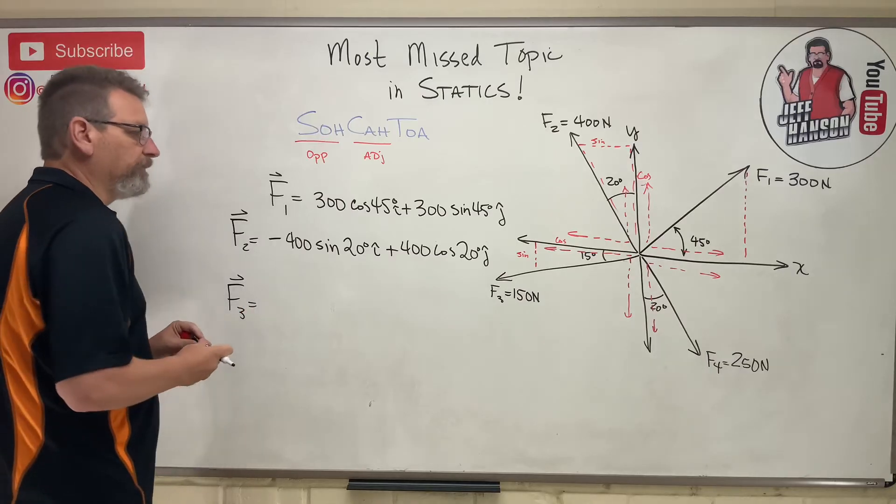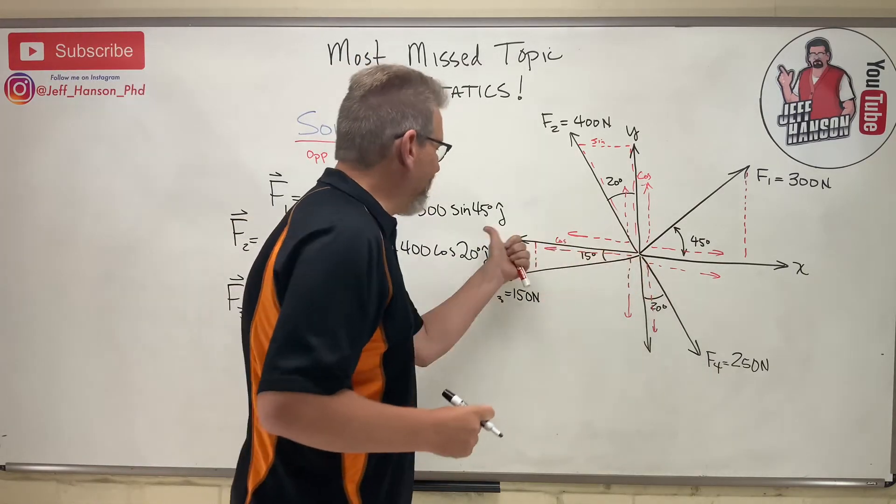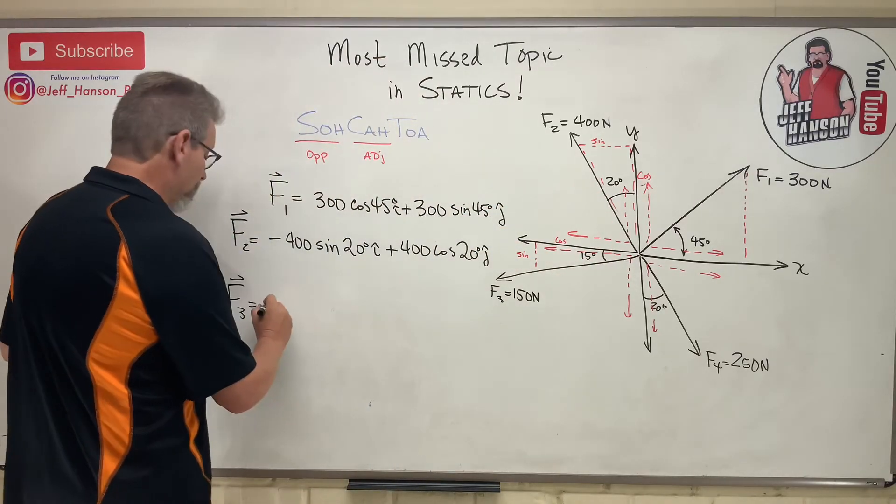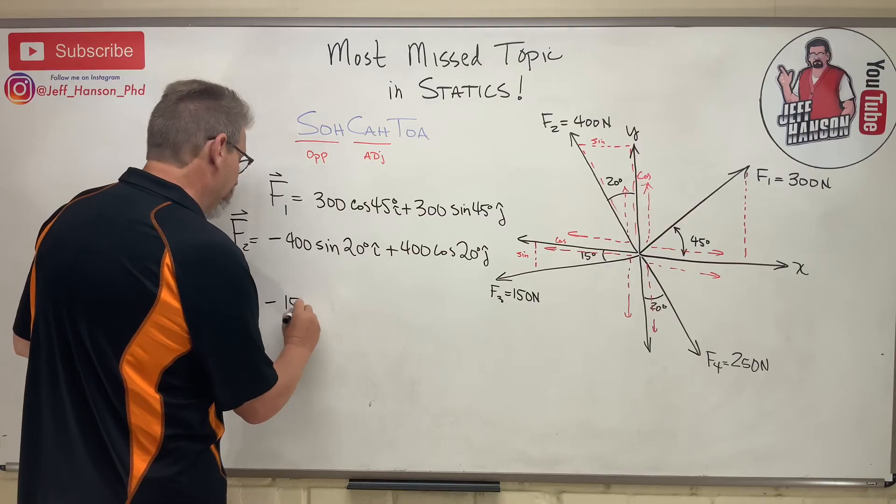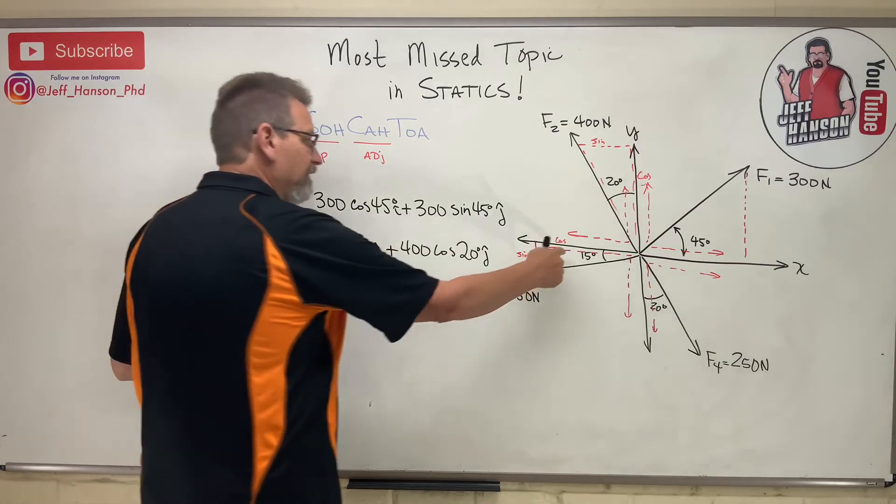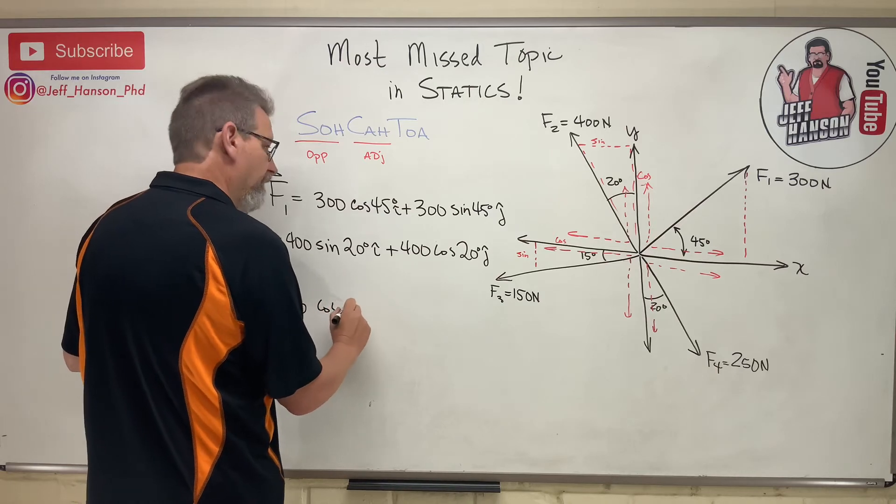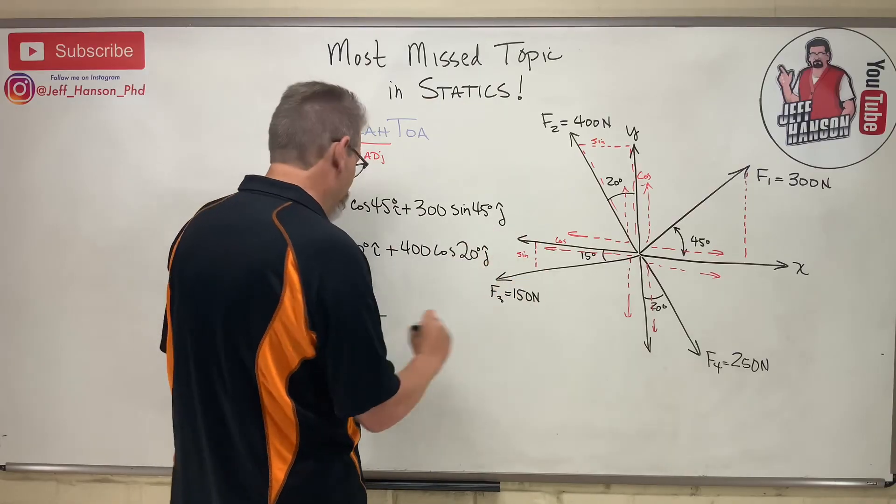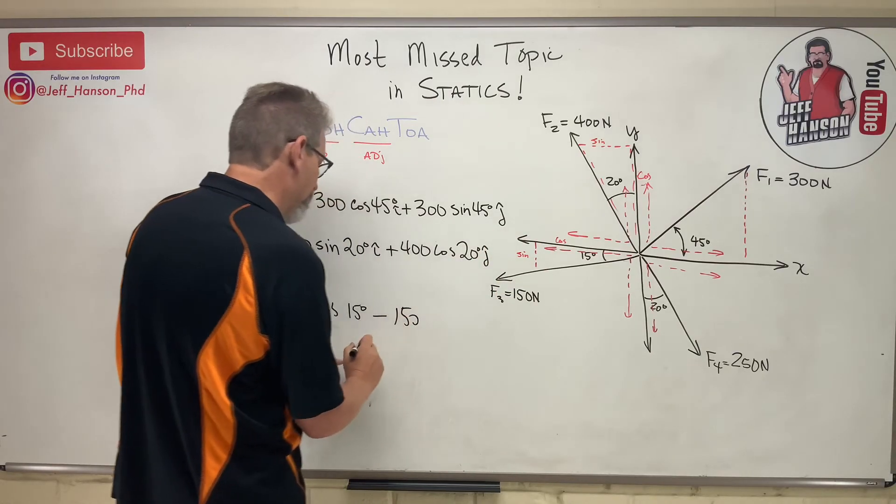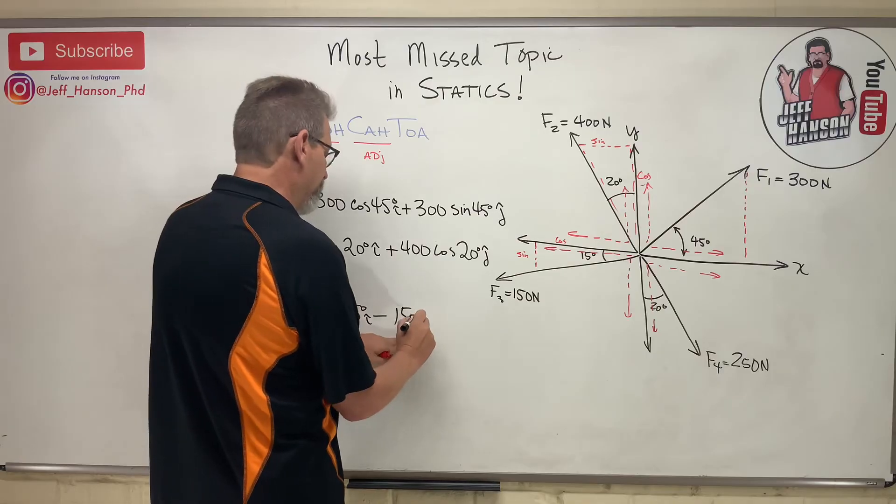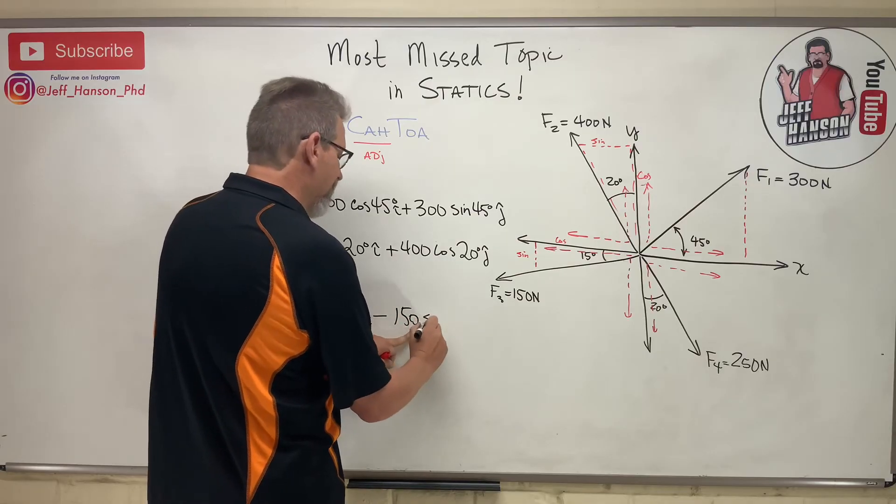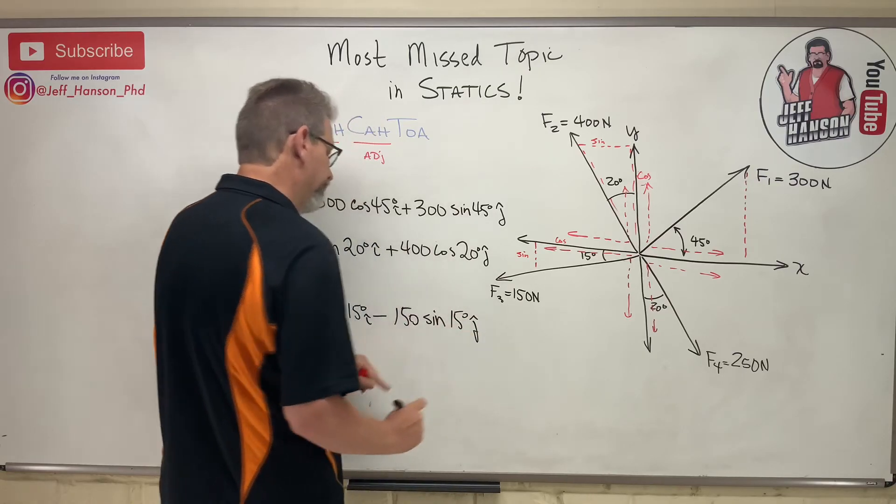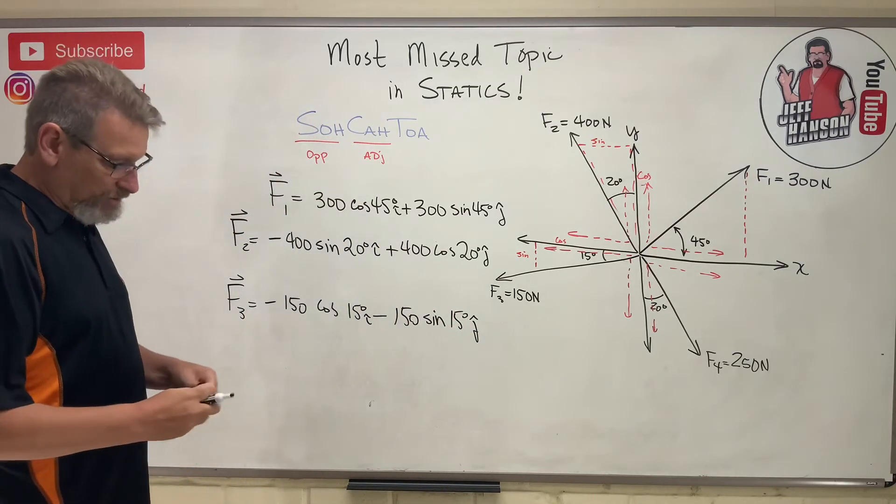Is equal to - and the x is negative and the y is negative, so both these are going to be negative components, aren't they? So negative 150 times the - what's the x side? Cosine of 15 degrees minus - y component going downhill - 150, oh I keep forgetting my i's and j's - doing an i hat, 150 sine 15 degrees j hat. So this isn't too bad, right? Once you get the hang of this, it's not too bad.